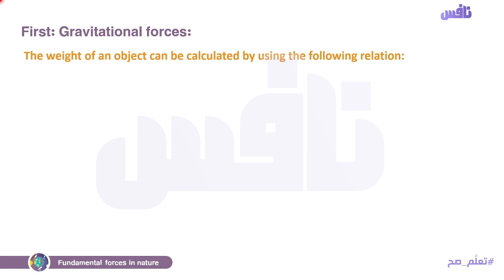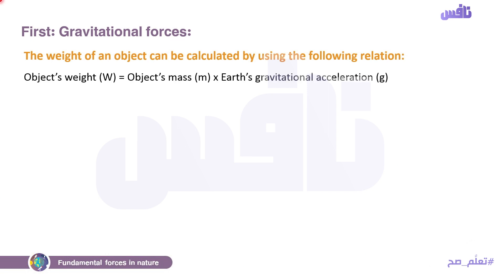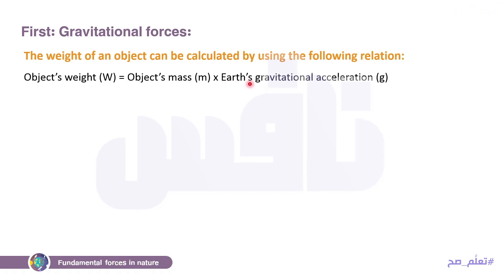The weight of an object can be calculated using the following relation: لو أنا عارف الmaس بتاعته، we can calculate the object's weight. Object's weight equals object's mass times the earth's gravitational acceleration. هنجيب الماس بتاع object بالbalance وبعد كده times the earth's gravitational acceleration. بالنسبة للأرض هي 9.8.